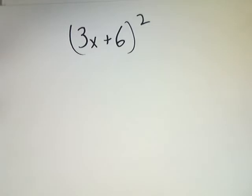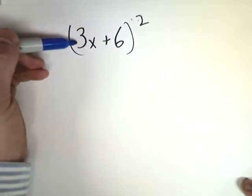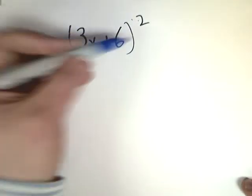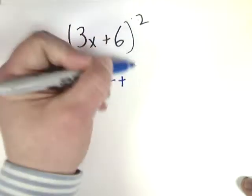You had this type of problem, maybe, maybe not. Originally you probably did 3 to the second power, which is 9x squared, and then you did 6 times 6, which is 36.